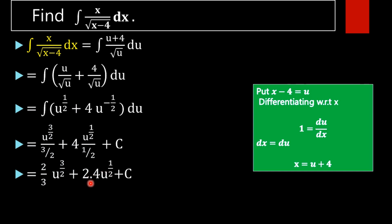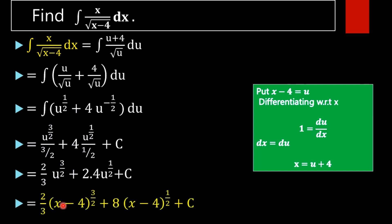What is 2 into 4? That is 8. Then in the next step, on substituting the value of u, we will get 2 by 3 into x minus 4 whole raised to 3 by 2, plus 8 into x minus 4 whole raised to half, plus c. Which is the required result.